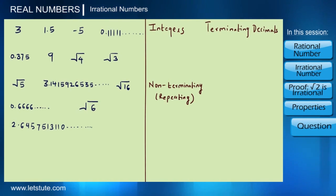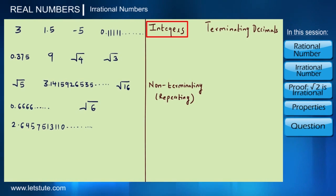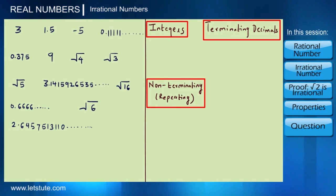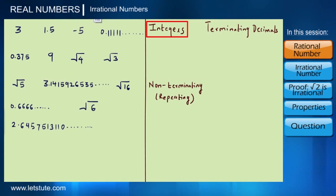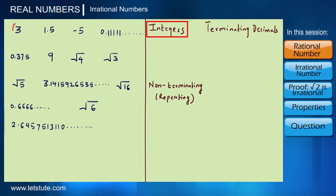Hello everyone. We know that integers, terminating decimals, and non-terminating repeating decimals are called rational numbers because we can write them as a ratio of integers. Here we can easily identify integers because they are not decimals.